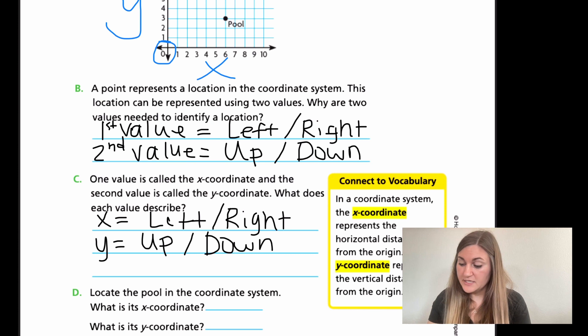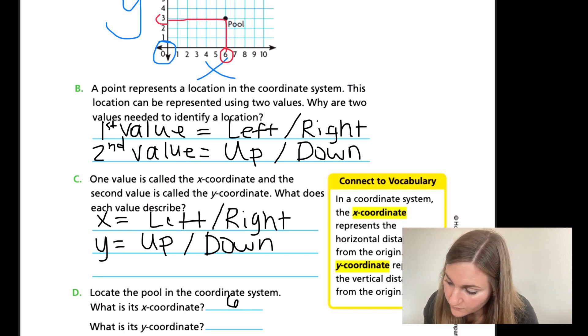Last one on this page, D. It says, locate the pool in the coordinate system. So what is its X coordinate? Now we're jumping up to the top in that coordinate system, in that plane, and it has a dot that says pool. What is the X coordinate? Look along that X axis. What number is it matched up with? If you just were to go down, you see how it's at six? That is my X coordinate, it's at six. Then if I were to go from my Y axis, it's over at my three on my Y axis. So then I would put a three here. So your X coordinate is six, and your Y coordinate is three, and that is where they intersect.